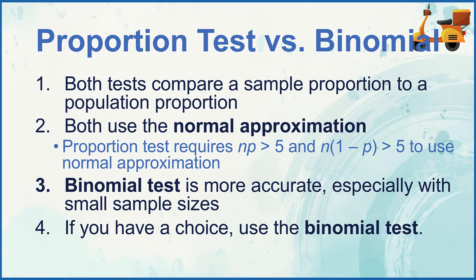You may recall that I demonstrated how to do a proportion test. Now, as I'm showing you JASP, I'm going to use a binomial test. Why, and what's the difference? Both the proportion test and the binomial test compare a sample proportion to a population proportion, and they both use a normal approximation. But with the proportion test, you have to have n times p greater than 5, and n times 1 minus p greater than 5 in order to use that normal approximation. The binomial test is more accurate, especially when you have small sample sizes. So in general, if you have a choice, I would go with the binomial test. Also, JASP gives us the option for doing a binomial test, but it does not have a setting for proportion test.